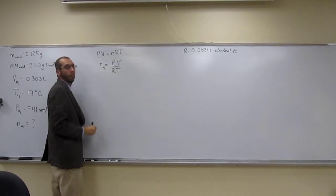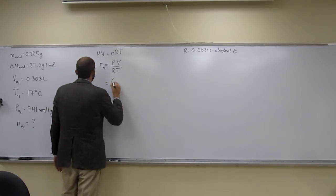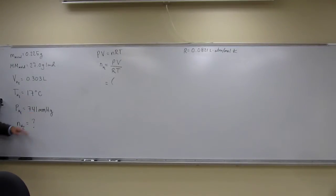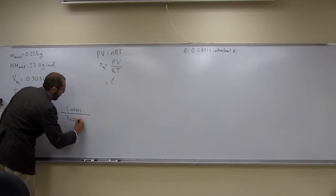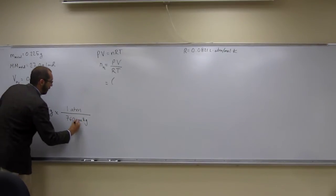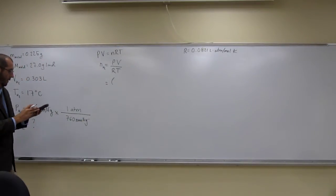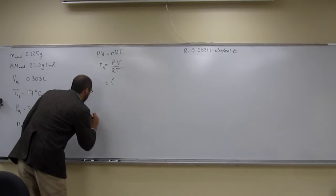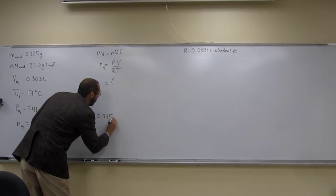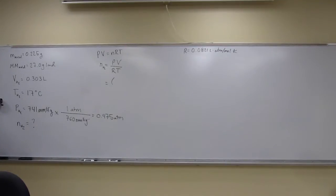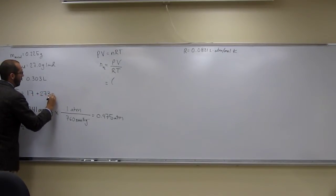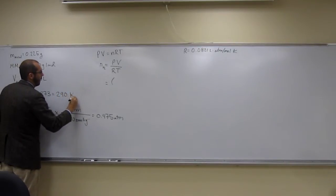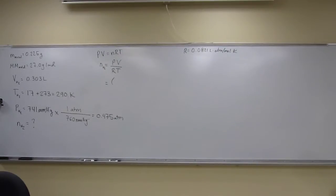We need to check units. The pressure in millimeters of mercury needs to be converted: 741 mmHg × (1 atm / 760 mmHg) gives 0.975 atm. The volume is 0.303 liters — that's already correct. The temperature needs to be converted: 17°C + 273 = 290 kelvin.